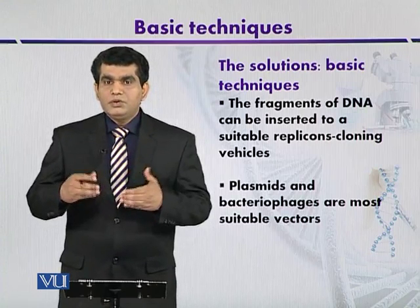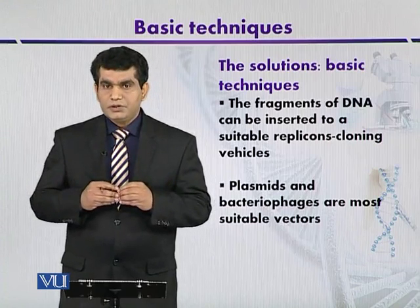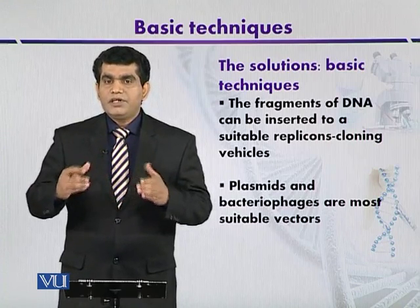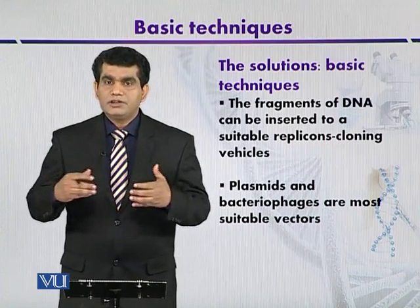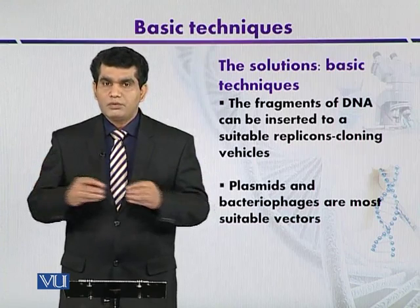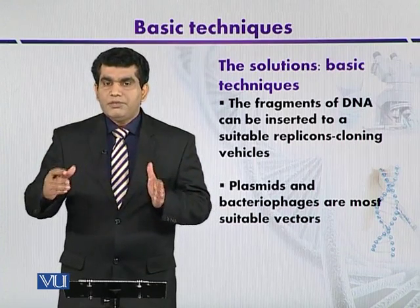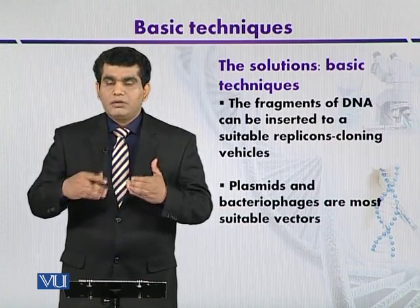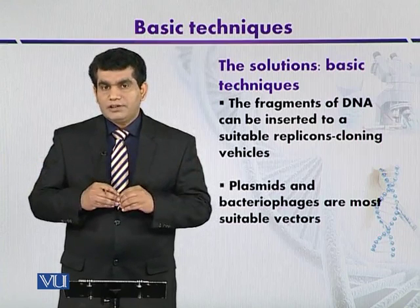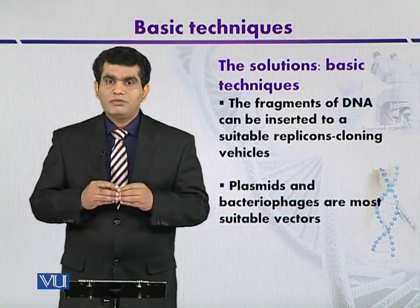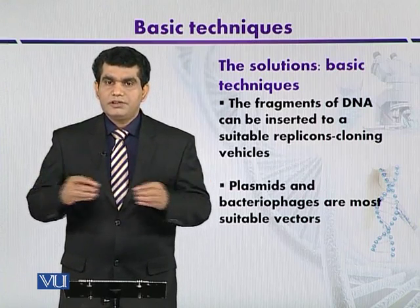There is a solution to this problem that scientists have worked on. The foreign DNA, which we can call our gene of interest, can be inserted into a suitable replicon. These replicons are fragments of DNA that can be used as a cloning vector. Different types of cloning vectors are available, and the most important ones are the bacterial plasmids and bacteriophages.